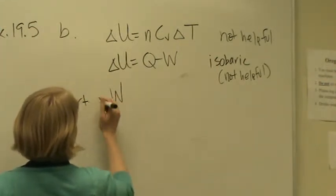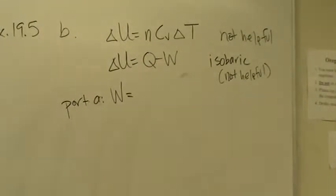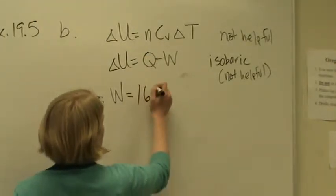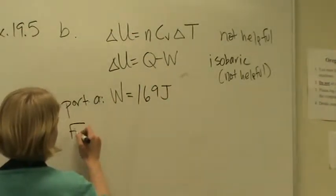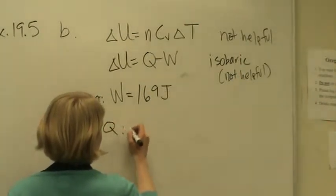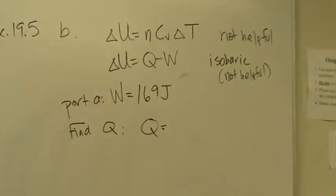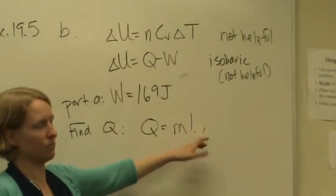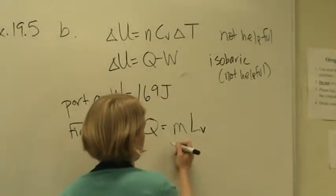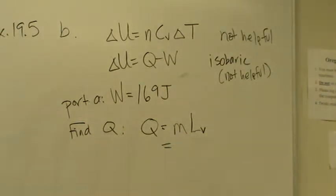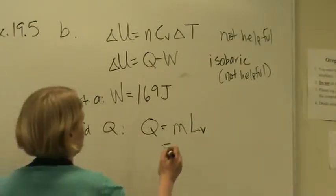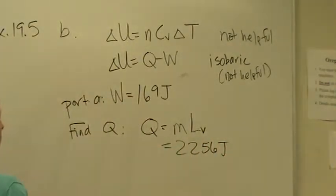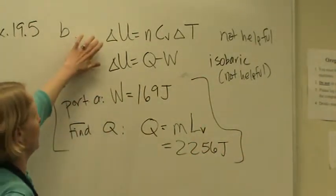So part A we found out that work was whatever the book tells us it is. One hundred and sixty-nine joules. And we can figure out Q using stuff we learned last week. So we're going from liquid water to gaseous water. So we've got a state change. So the Q we can see in the solution here, the Q is defined by MLV. And the tip off is that they gave us that latent heat of vaporization term. So making use of that hint we'll solve this. And they give us the answer is two thousand two hundred and fifty-six joules.